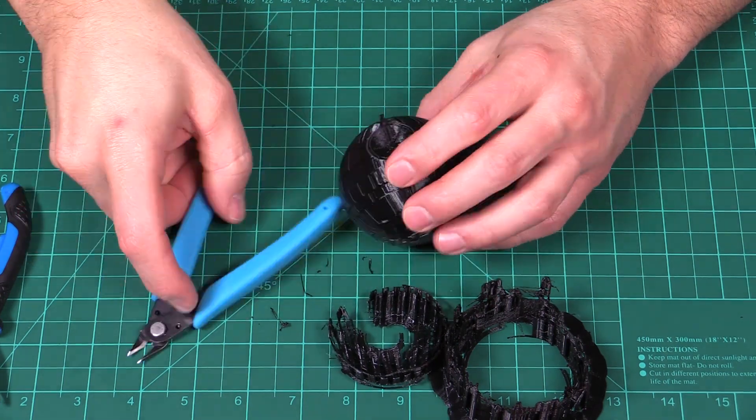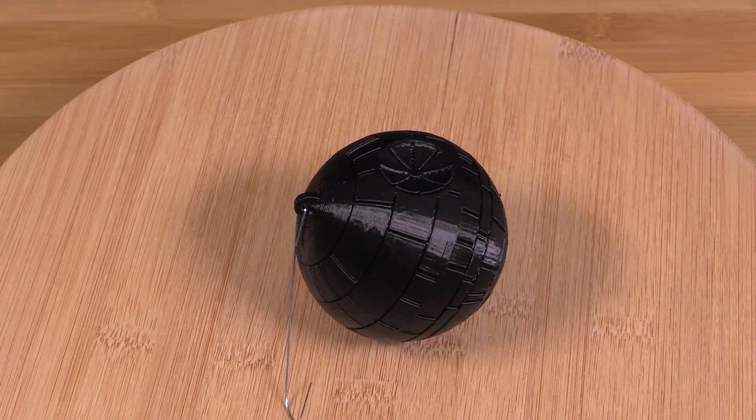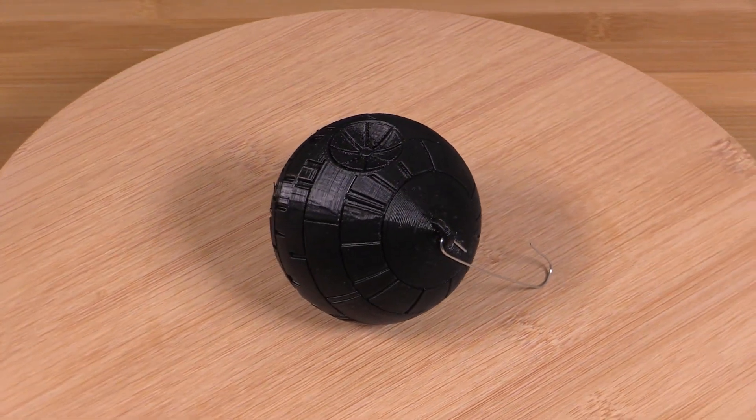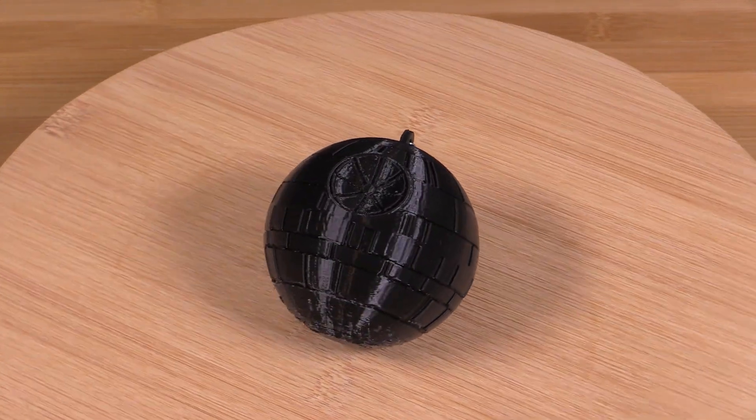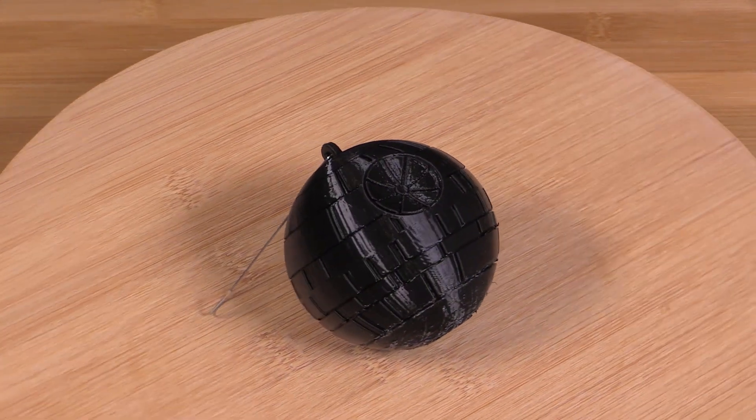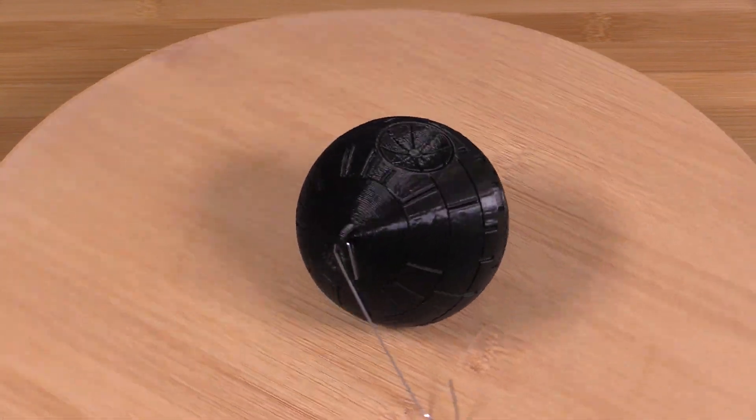And here we have the Death Star done in a black filament. This is kind of a neat Christmas ornament. I like the way it kind of shines there a bit. It really looks like one of those Christmas balls.